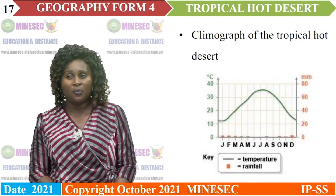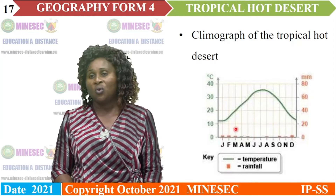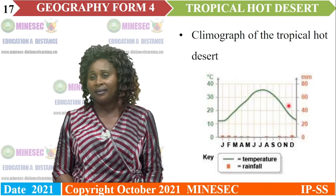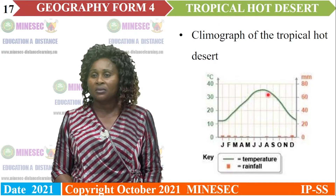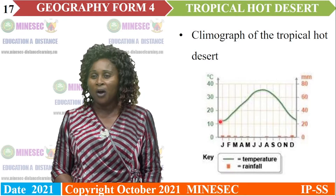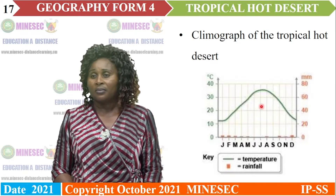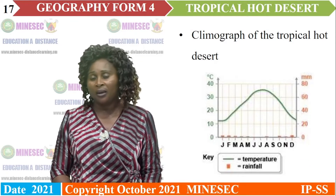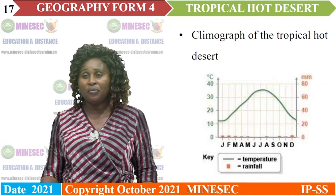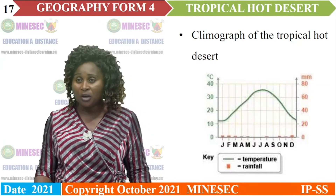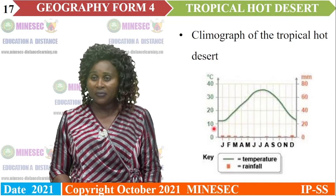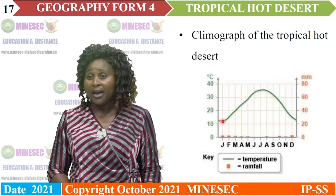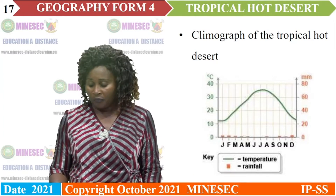The climograph of the tropical hot desert shows a very high temperature graph. In some months it goes up to about 38 degrees, and in others it falls to 10 degrees. The temperature range is high — the highest temperature of the month minus the lowest. If the highest is 37 degrees and the lowest is 15, you can calculate the temperature range of the hot desert biome.